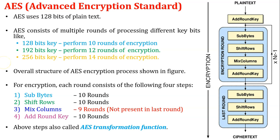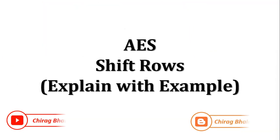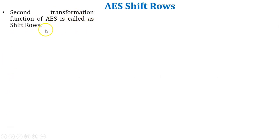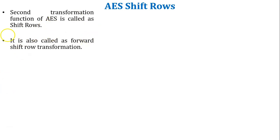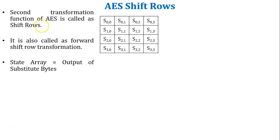In this video, I am going to discuss AES shift rows with an example. The second transformation function of AES is called shift rows, also known as forward shift row transformation. The shift rows transformation function is performed on the state array, where the state array is the output of substitute bytes.